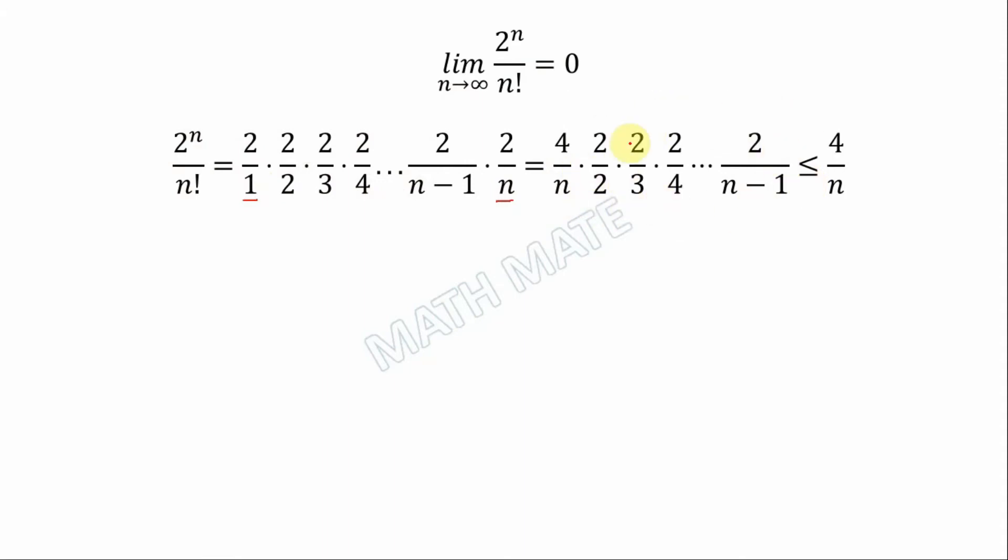In each fraction, the numerator is less than the denominator, so for this reason the value of this multiplication is less than one. It follows that we can write this expression as less than 4 divided by n.